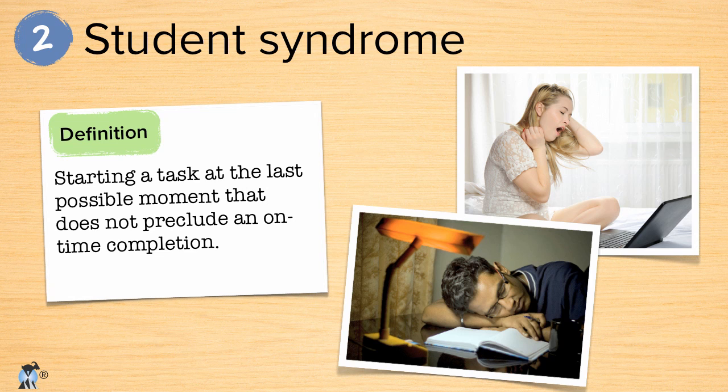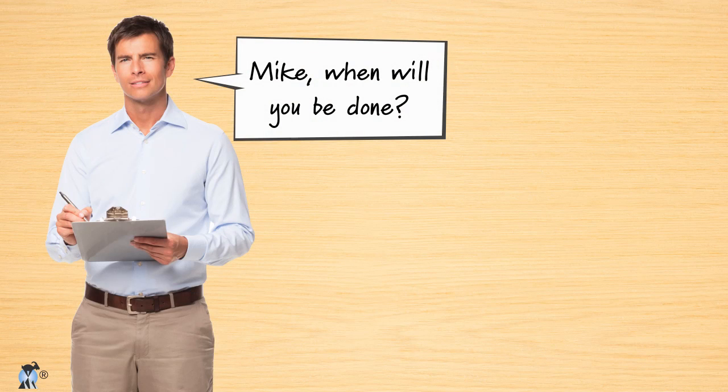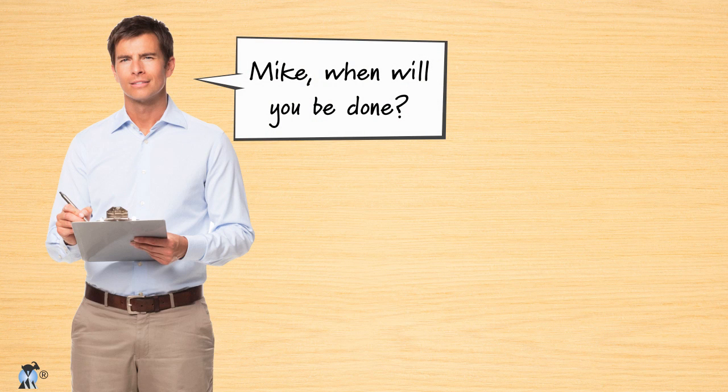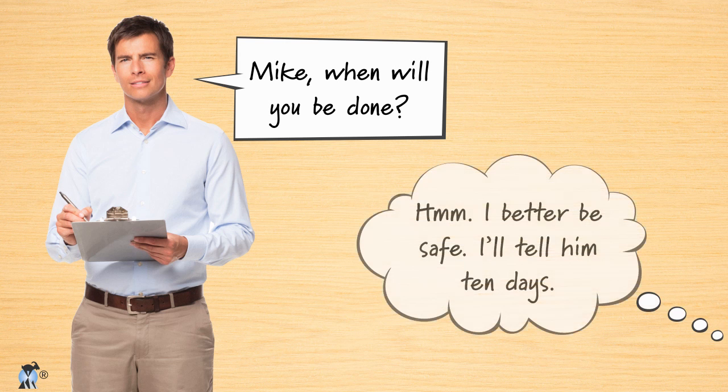Student syndrome affects traditional projects because we often feel optimistic about estimates we gave earlier. Suppose my project manager asks me how long something will take. I think about it and decide I'm likely to finish in seven days, but I don't want to risk being late so I tell my manager 10 days.